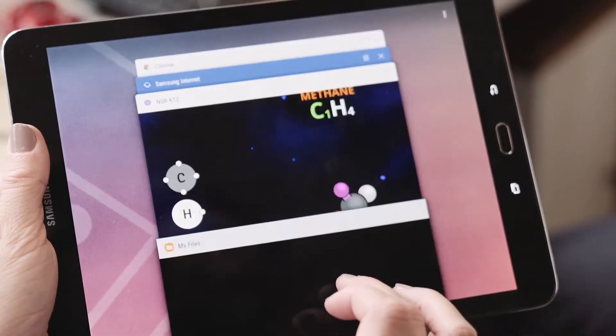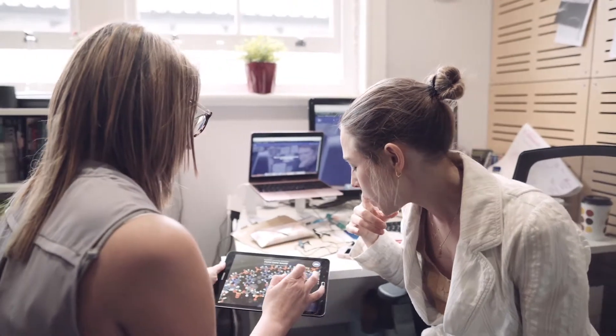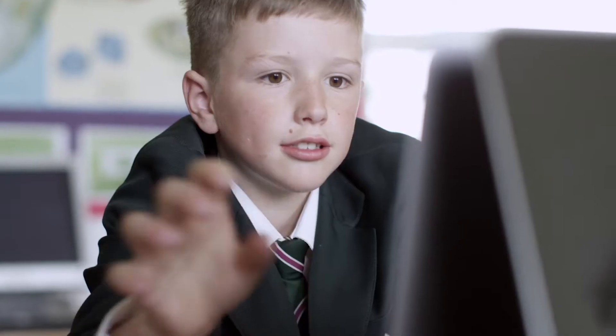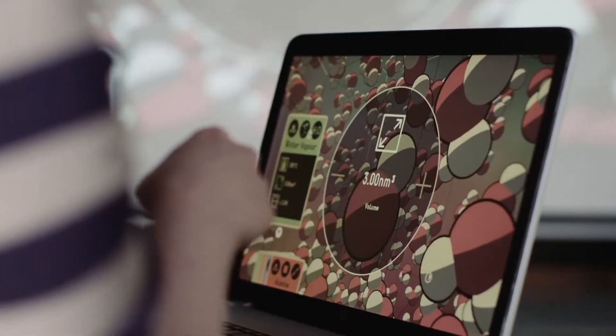We've created a digital tool called NanoSymbox. NanoSymbox is software that can take very complex scientific information and then turn that into a visualization that people can interact with. So you can essentially reach out and grab atoms and molecules. It's like you've shrunk to the size of an atom or a molecule.